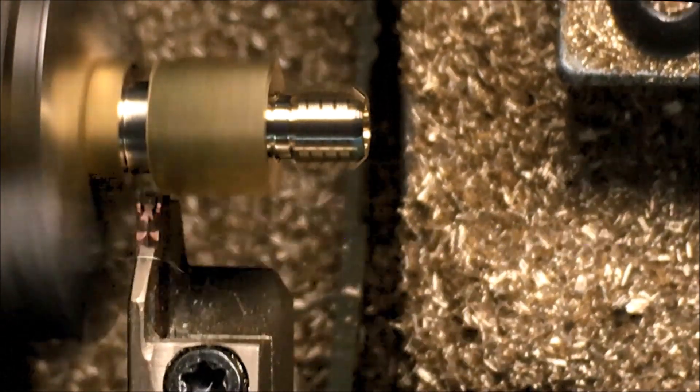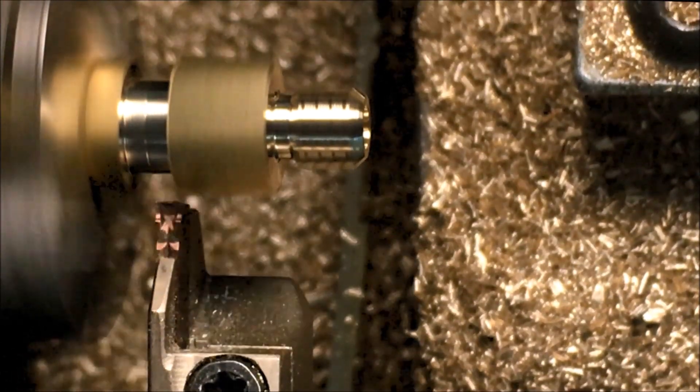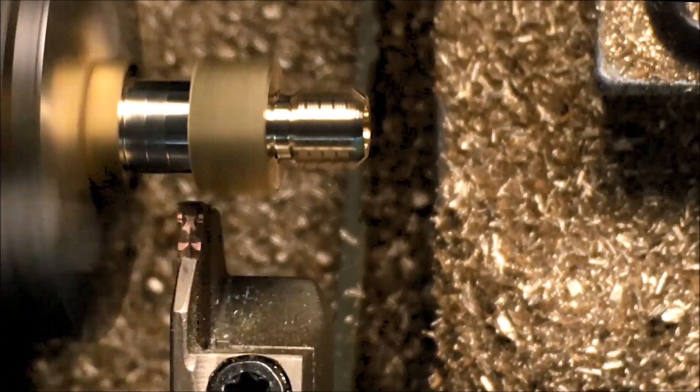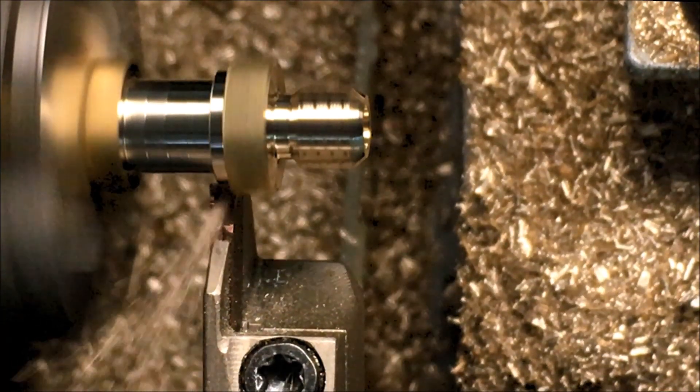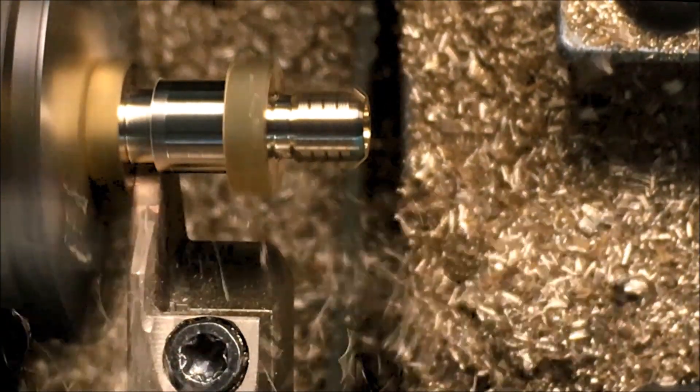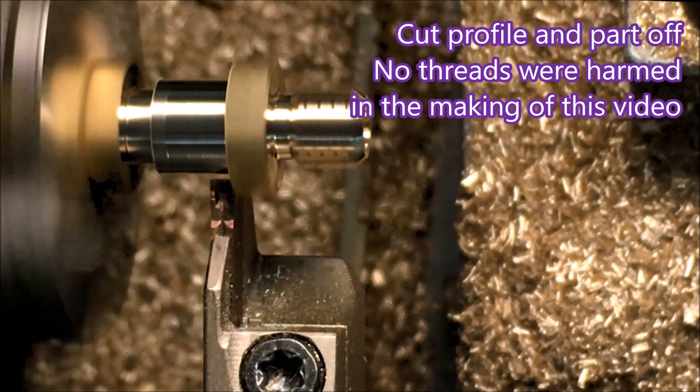First five grooves here, they are part of a canned cycle. It's just one line of code that cuts this groove. And then we start following the profile that I laid out in the CAD. Now we're doing the profiling.